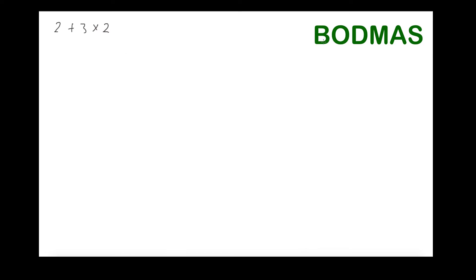I'm going to work through a series of examples to show how you use the BODMAS acronym to solve questions in the right order. I'll leave the acronym in the top right-hand corner as a reminder. Starting with a simple one: 2 plus 3 times 2. Looking at our acronym, the first operation we have is multiplication, which takes precedence over addition. So we do 3 times 2 equals 6 first, rewrite as 2 plus 6, and the answer is 8.